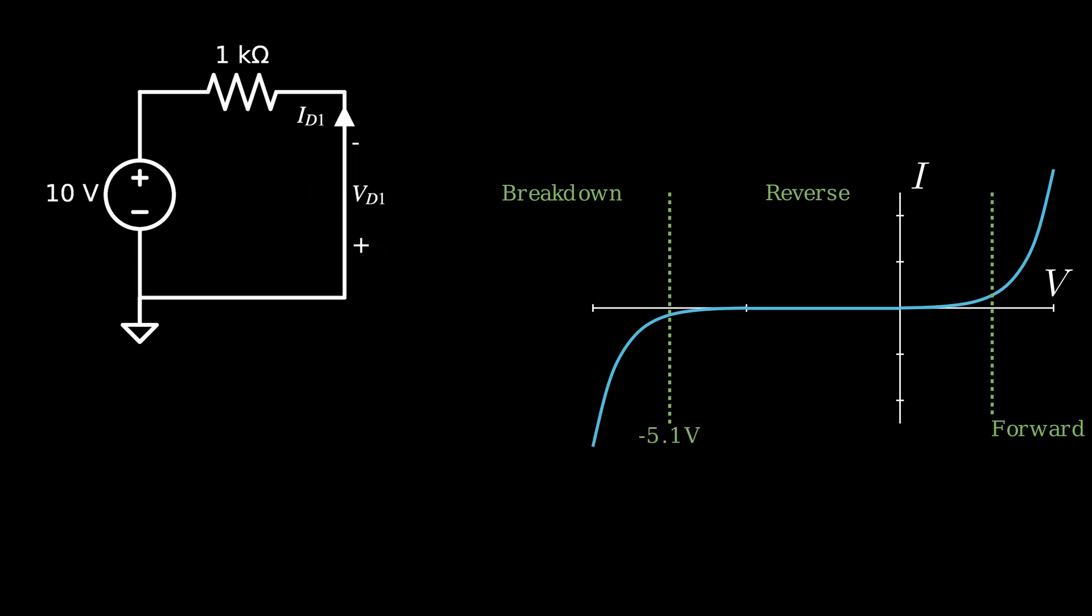We take the same approach as before. Treat the diode as a short and find the current through it. Once again, the voltage across the short will be zero. And then we treat the diode as an open. The current will always be zero, and we find the voltage across the open. We add these points to the plot and connect them to form the load line.